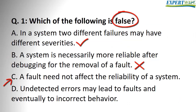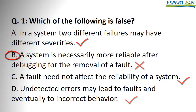Option C: a fault need not affect the reliability of the system. This confirms what we said about Option B — some faults will not affect the reliability of the system. Option D: undetected errors may lead to faults and eventually to incorrect behavior. This is obviously true. So the correct answer, which is the false statement, is B.